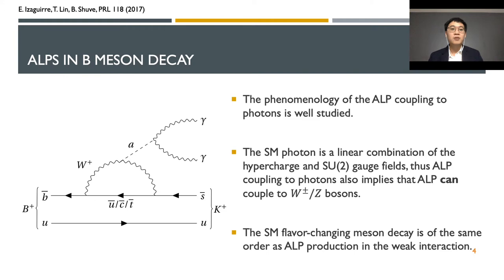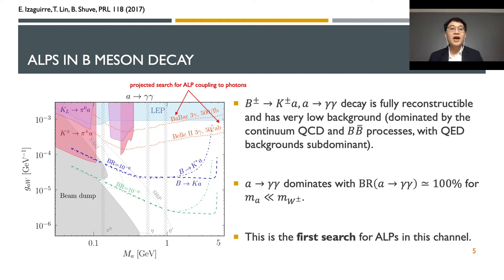Previous searches for axion-like particles have focused on axion coupling with photons. However, because the standard model photon is a linear combination between the hypercharge and the SU2 gauge field, axion coupling with photons is like axion can also couple with W or Z bosons. In this search, we specifically look for axion-like particles in B-meson decay where they couple with W boson as shown in the Feynman diagram. Note that the standard model flavor changing meson decay is of same order or even smaller than the axion production in the weak interaction.